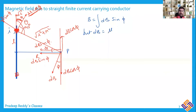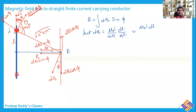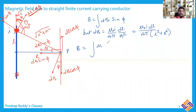dB equals μ₀i divided by 4π, times dl divided by r², where r is the distance from the element to point P. Since dl·cosφ is making 90 degrees, we don't need an extra sinθ term. So dB = μ₀i·dl / (4π·(l² + R²)). Substituting into the integral: B = ∫ μ₀i·dl / (4π·(l² + R²)) · sinφ.